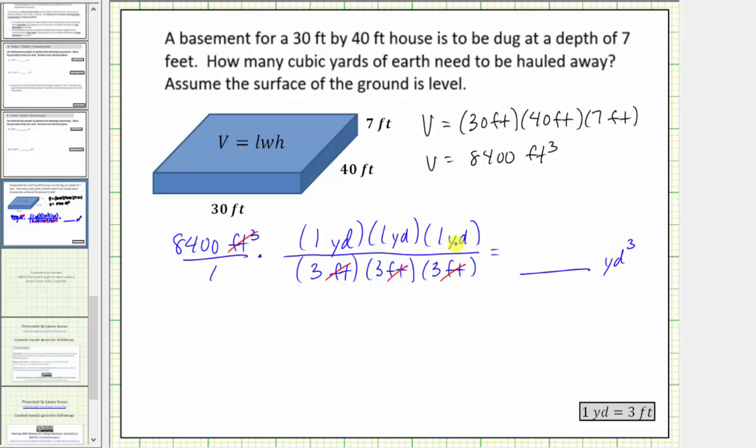Multiplying we have 8,400 divided by 3 times 3 times 3 which equals 27. Notice we have an improper fraction. This does simplify because 8,400 and 27 share a common factor of 3. Let's first simplify this by dividing the numerator and denominator by 3. This gives us a simplified improper fraction of 2,800 divided by 9 cubic yards.